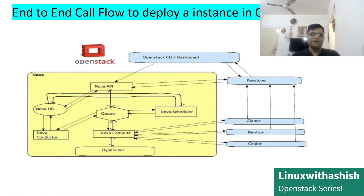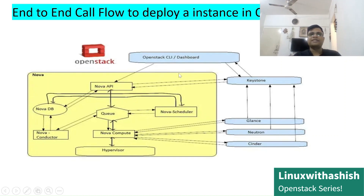Now that Nova Compute has all the details, it talks to libvirt — which sits between Nova Compute and the hypervisor — and finally, through libvirt, the virtual machine is successfully provisioned on the hypervisor. This is how you create a virtual machine on OpenStack. Once the VM is created, you can deploy applications on top of it. In the next video, Day 4, Day 5, and Day 6 will cover how to deploy OpenStack cloud using PackStack. Thanks for watching.